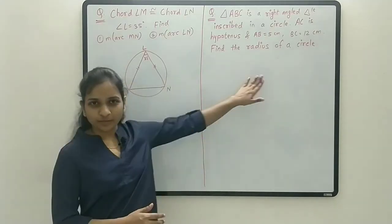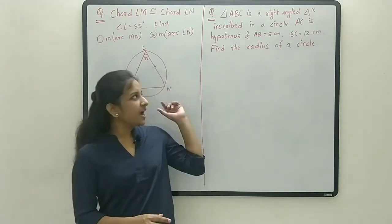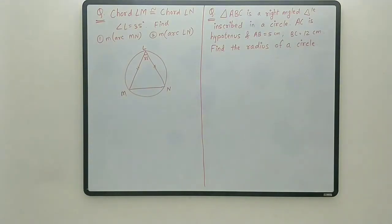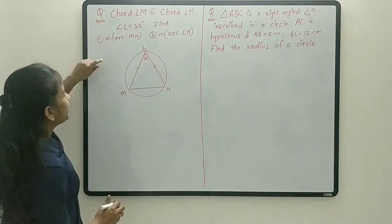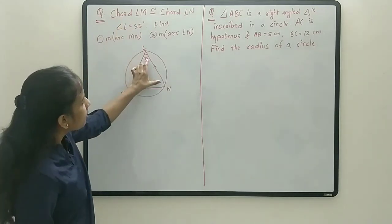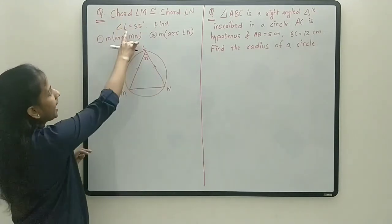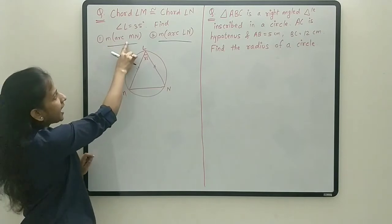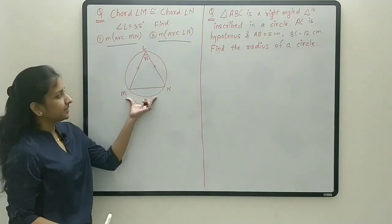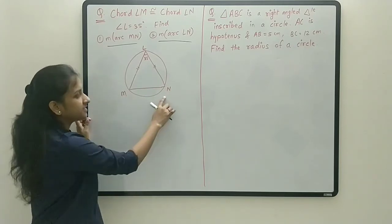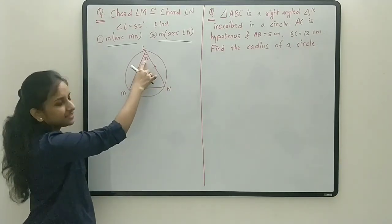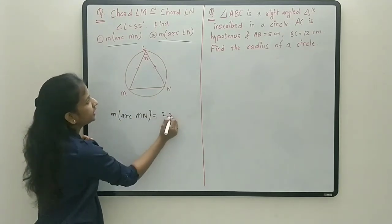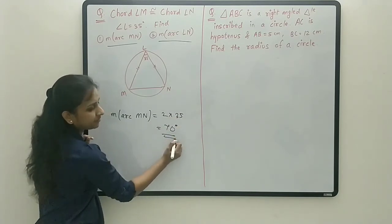Here I have taken two problems — pause this video, take a screenshot, and try to solve them on your own, then match your answers with mine. In Problem 1, chord LM is congruent to chord LN, and angle L is given as 35 degrees. We have to find the measure of arc MN. Since the inscribed angle is half the measure of the intercepted arc, the measure of arc MN is 2 × 35 = 70 degrees.